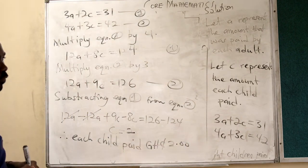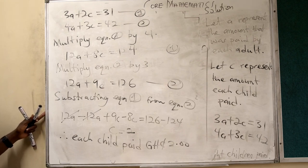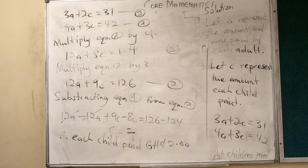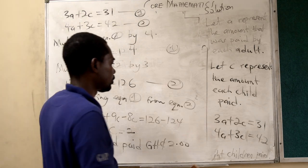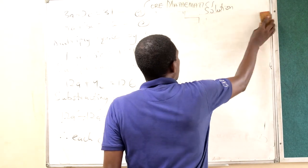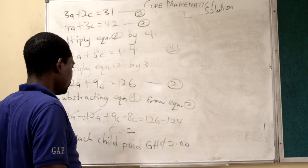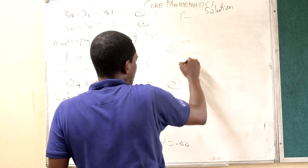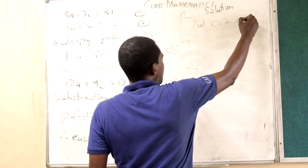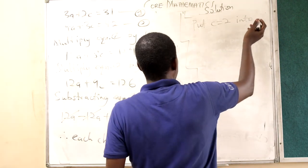each child paid 2 cedis. Now let's go on to find how much each adult also paid. I will put the C is equal to 2 into any of the equations and I will get the answer. I can put C is equal to 2 into equation 1.